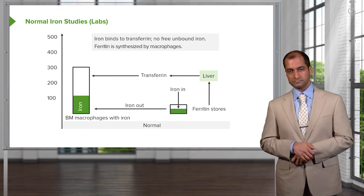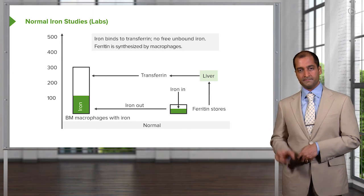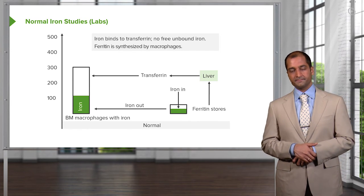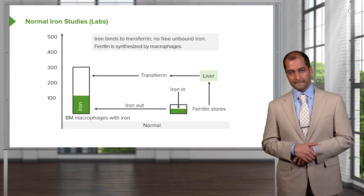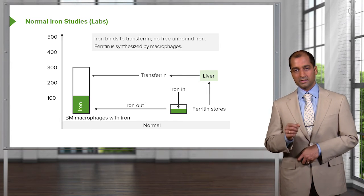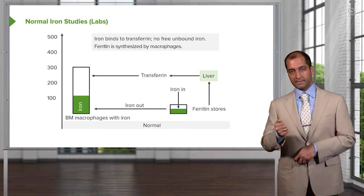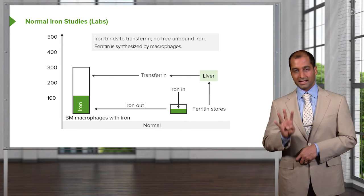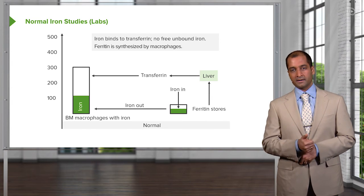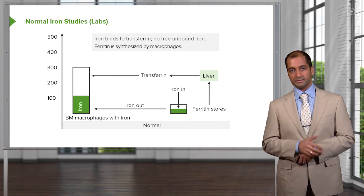Number four: do not get your total iron binding capacity confused with the column on the left, which represents iron being saturated. Number four is called transferrin saturation. It's very easy to confuse transferrin with transferrin saturation — hence they call transferrin, laboratory-wise, total iron binding capacity. These are the four we keep playing around with: number one, serum iron; number two, ferritin — inverse relationship with TIBC; and number four, saturation.